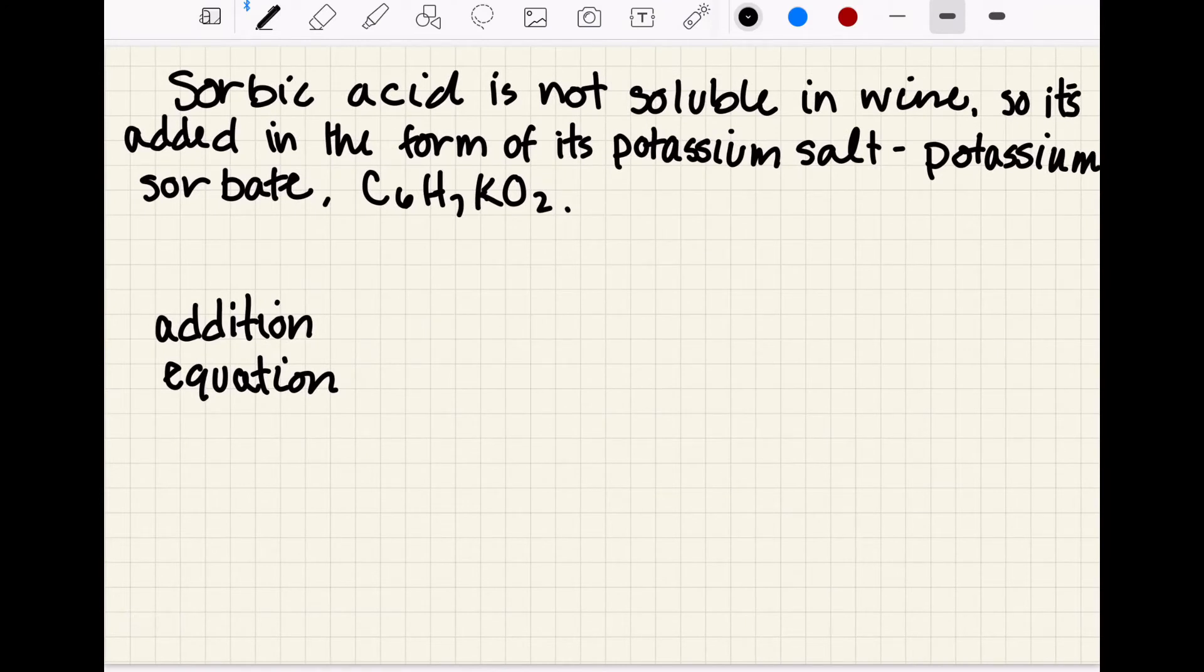Okay, so I mentioned that sorbic acid is what actually provides the antimicrobial protection against yeast refermentation, but it's not as soluble in wine so we add it in the form of its potassium salt, which is potassium sorbate, and its chemical formula is C6H7KO2, and it contains 74% sorbic acid.